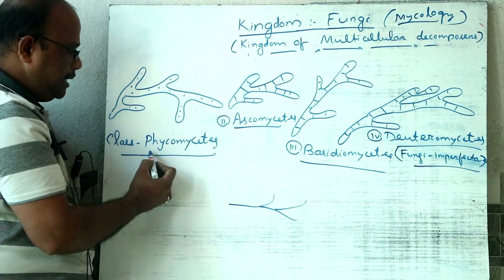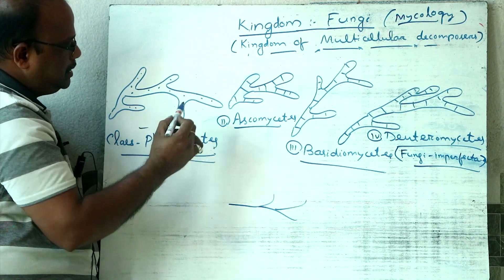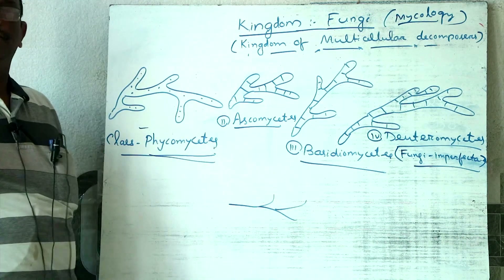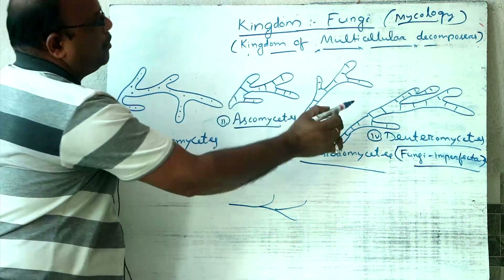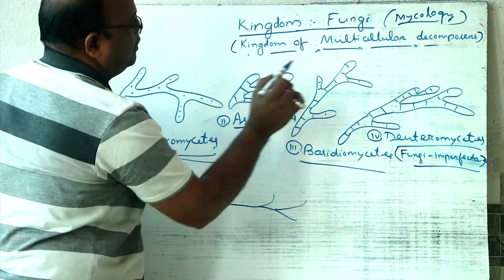This is the Phycomycetes class. In this class, the mycelium is septate — actually unseptate and coenocytic, meaning continuous cytoplasm without partition walls.